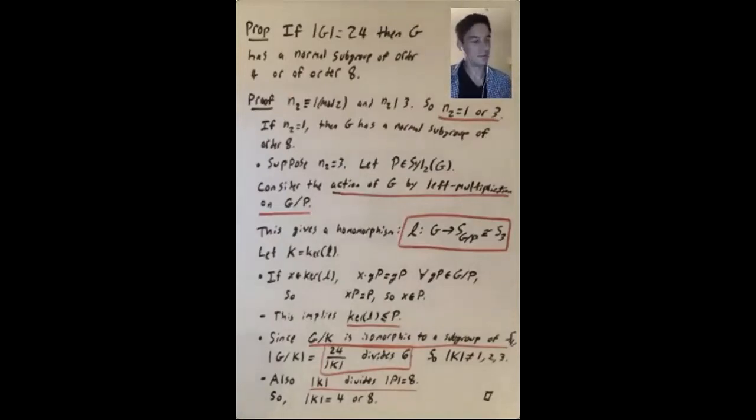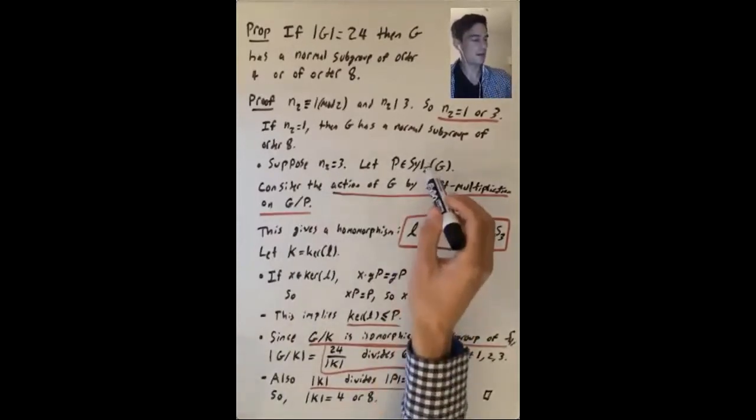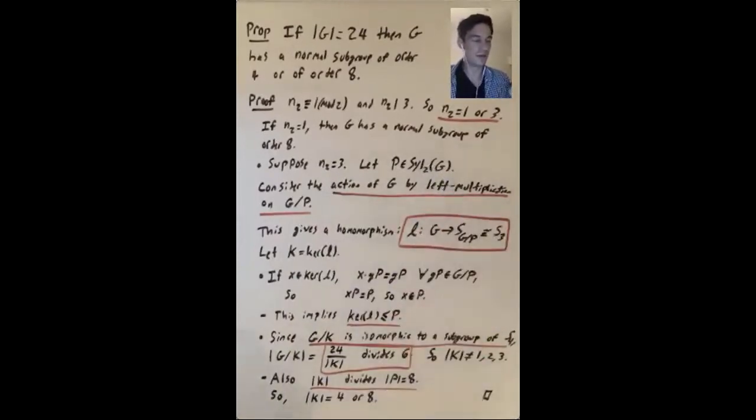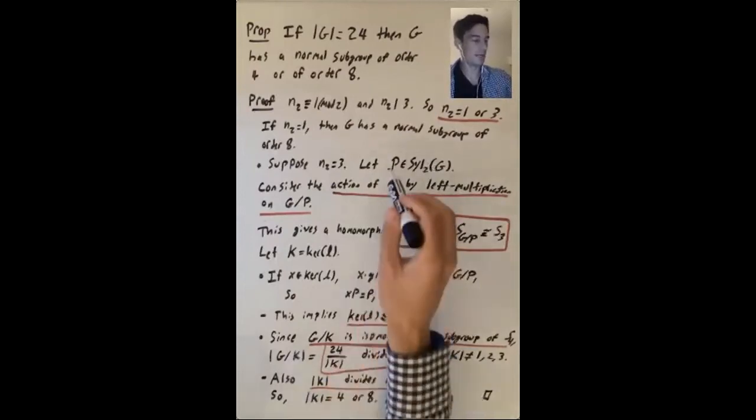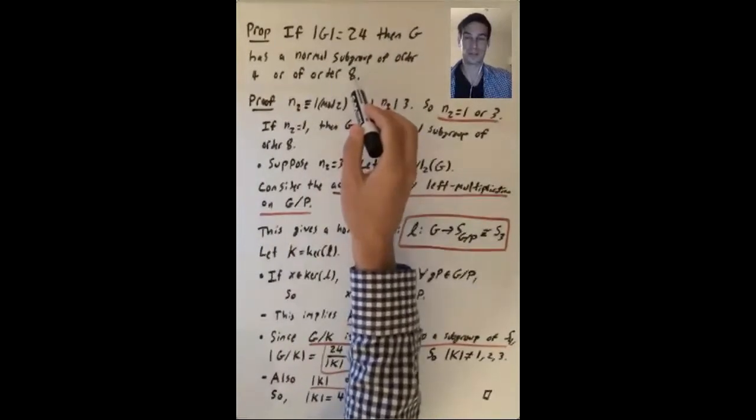So let's suppose that n2 equals 3, and let's pick some Sylow 2 subgroup of g and call it P. Now the idea here is clever, that we're going to prove this with a certain group action, and that's going to give us a homomorphism from g to somewhere.